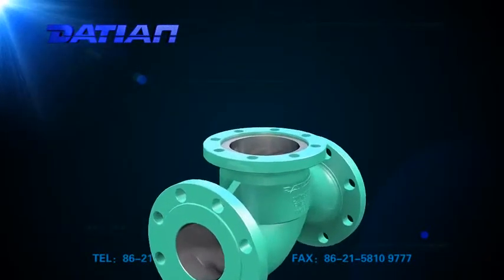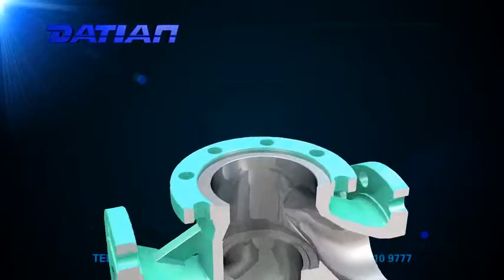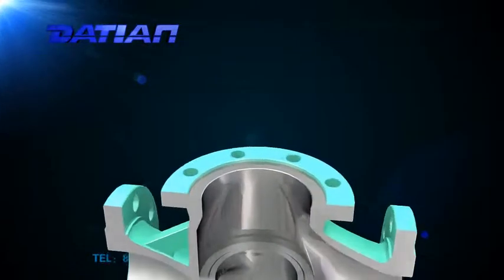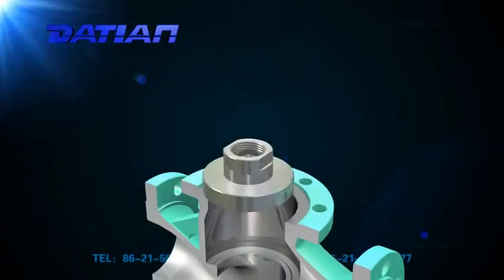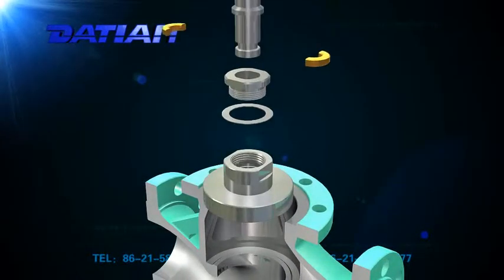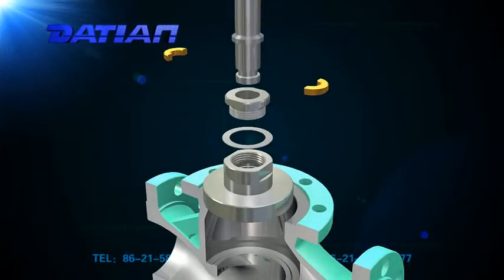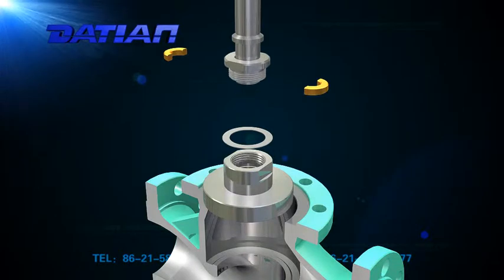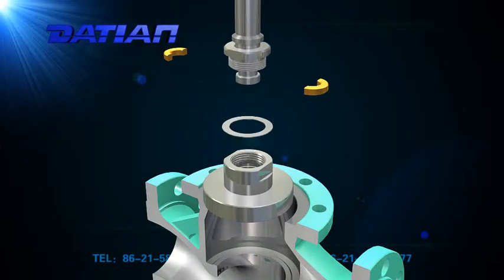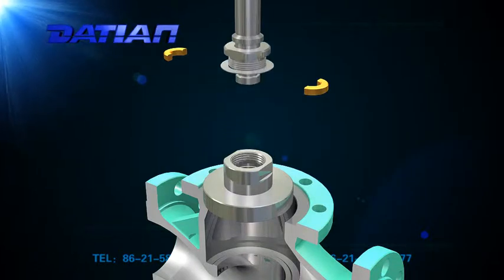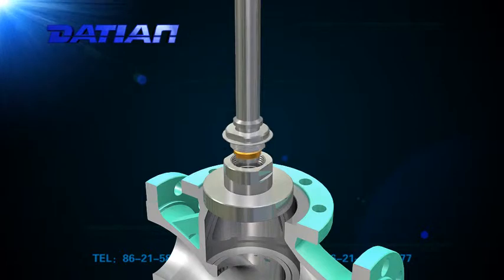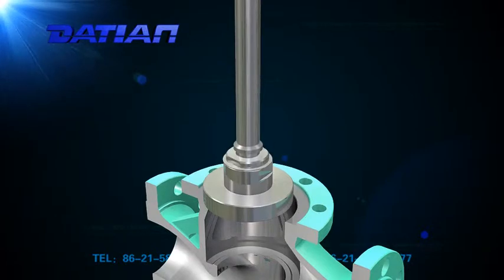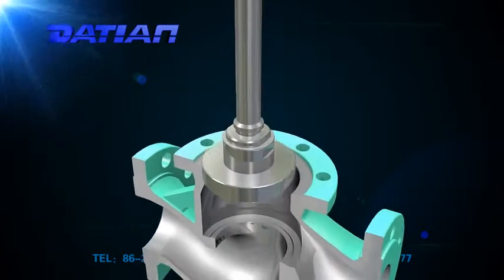6. Small size global valves use a forged body; larger sizes use a cast body. 7. Fluid has a big resistance and requires a bigger effort to close the valve, but can be designed as a self-balanced valve according to requirements.